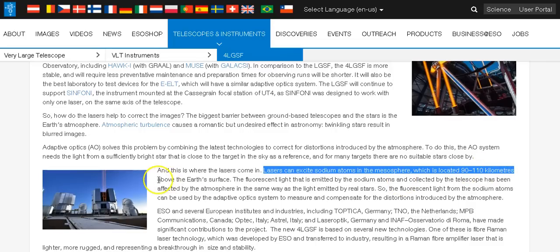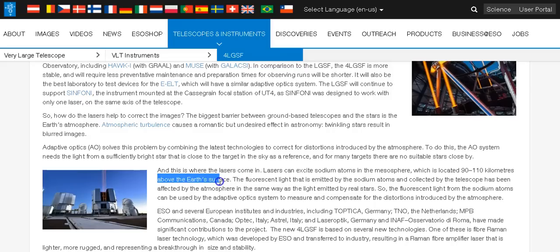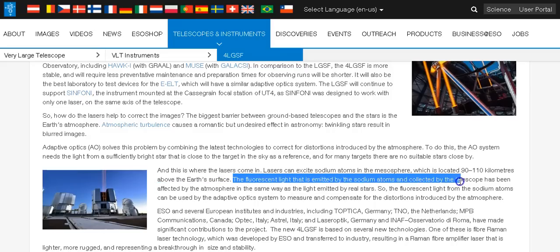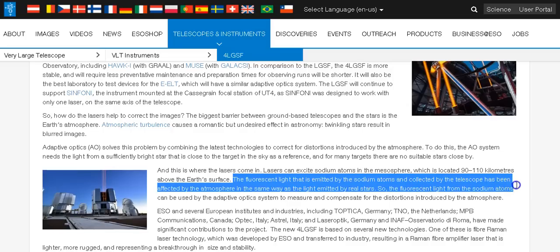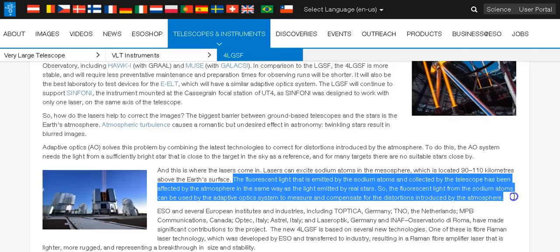They say the fluorescent light that is emitted by the sodium atoms and collected by the telescope has been affected by the atmosphere in the same way as the light emitted by real stars. So the fluorescent light from the sodium atoms can be used by the adaptive optic system to measure and compensate for the distortions introduced by the atmosphere.